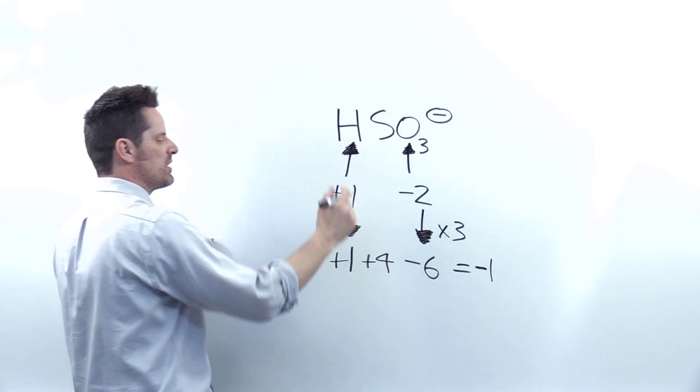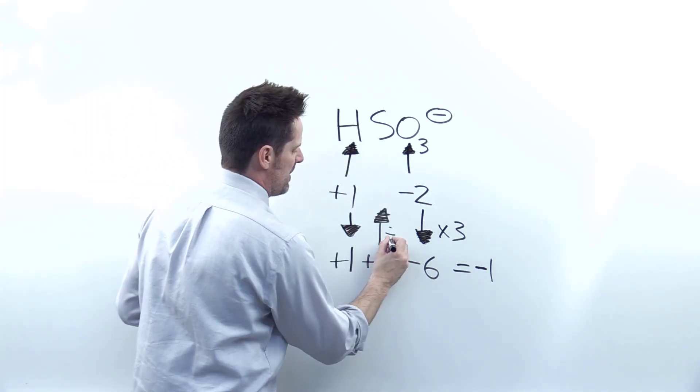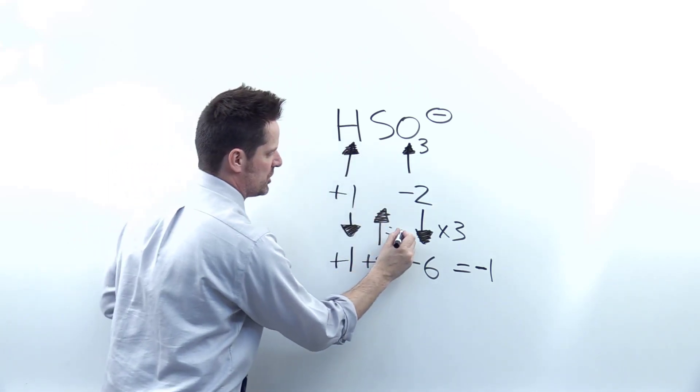Yeah, it's positive four. And to go backwards to the sulfur, I'm going to divide it by the total number of sulfur atoms in this formula, which is of course just one.